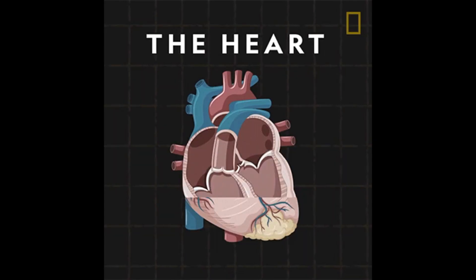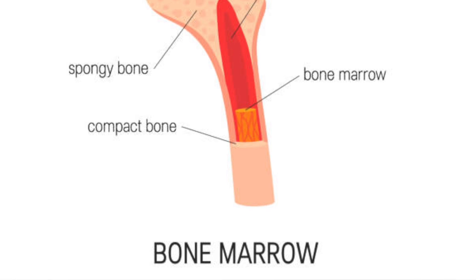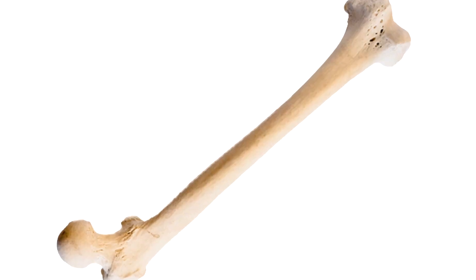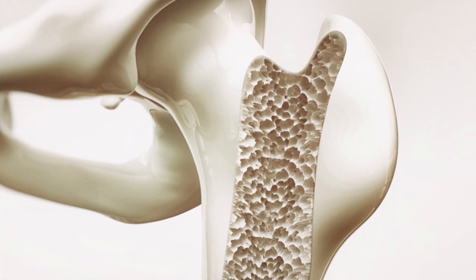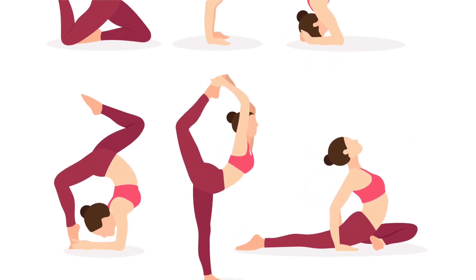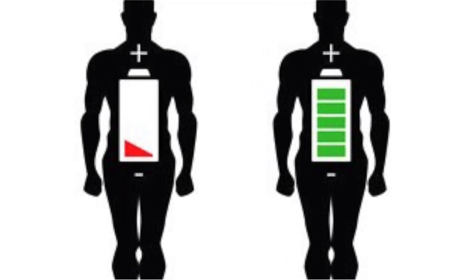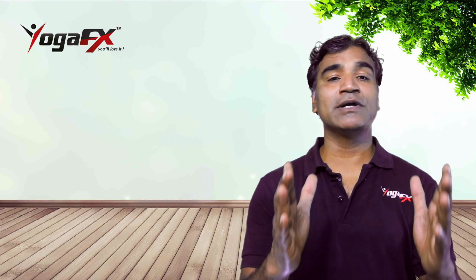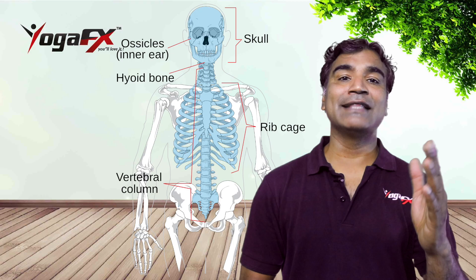The 206 bones that make up the human skeleton have many functions: they protect the softer parts of the body like the heart, brain, and lungs; blood cells are produced in the bone marrow; and bones store minerals like calcium and phosphorus. Although bones are very hard on the outside, on the inside they are much softer, porous, and sponge-like. Bones are living tissues that are growing and reshaping themselves according to the way we use our bodies. Yoga poses bring a steady supply of blood, nutrients, and energy to this living tissue. The skeletal system can be broken down into two parts: the axial skeleton and the appendicular skeleton.